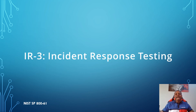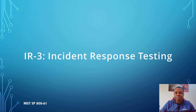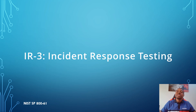The next control is IR3, which covers incident response testing. It focuses on how often the incident response plan is tested, how it is tested, whether results are documented, and how effectiveness is determined in order to improve it. Evidence we can request to satisfy IR3 includes the incident response test plan and results from the most recent tests.